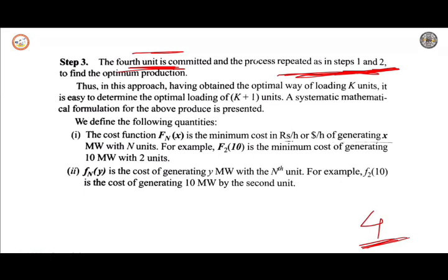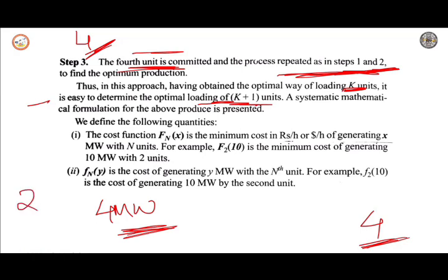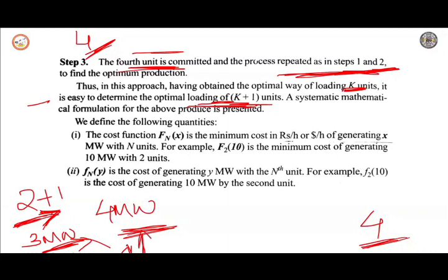In this approach, having obtained the optimal way of loading K units, it is easy to determine the optimal loading of K+1 units. For example, if 2 units have been determined to supply 3 megawatts most economically, then the remaining 1 megawatt can be assigned to the additional unit, and the optimal loading of that K+1 unit is straightforward to determine. The systematic mathematical formulation for this procedure can now be presented.